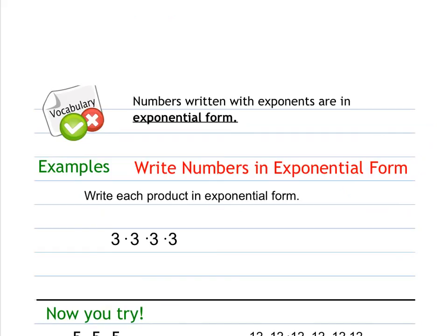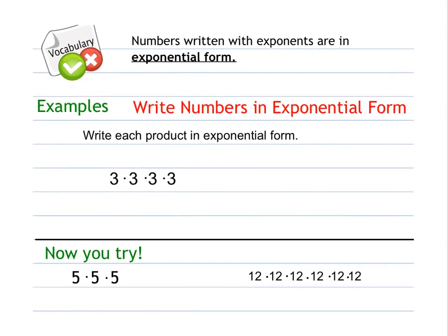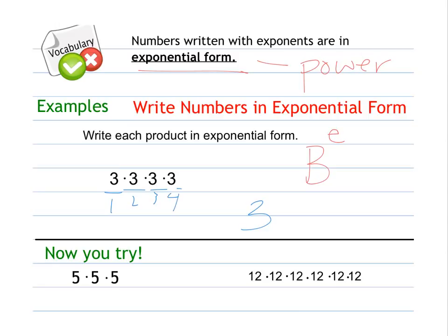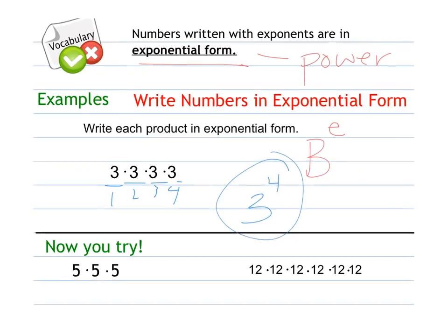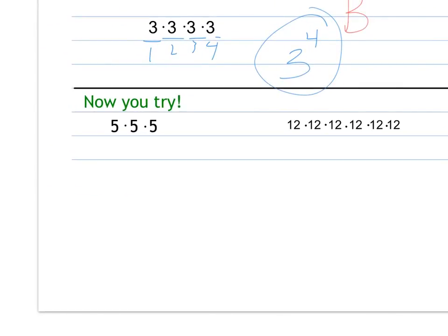The last part of the lesson is writing numbers in exponential form — writing them as a power. A power is used to show repeated multiplication with exponents. You need to decide what number is being multiplied by itself (your base) and how many times you multiply it (your exponent). For three times three times three times three, the base is three and there are four of them, so it's three to the fourth. Five times five times five has base five with three factors, so it's five to the third. Twelve multiplied by itself six times gives you twelve to the sixth.